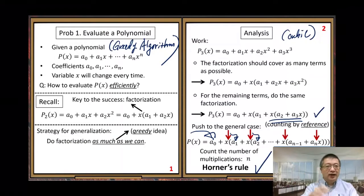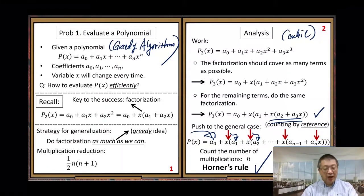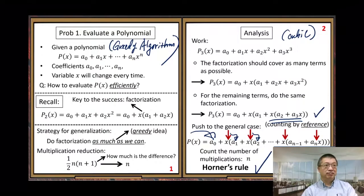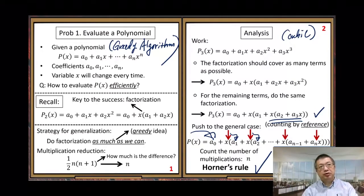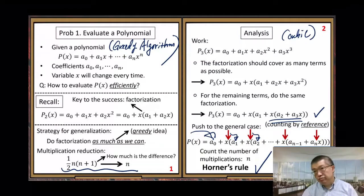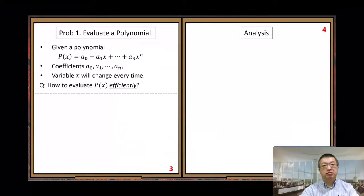Now let's look at the multiplication reduction result. Before the reduction we have a certain number of multiplications; after applying Horner's Rule we have n multiplications. To see the difference clearly, rather than just comparing the two formulas abstractly, let me work on two examples to let you feel the difference and get a strong impression about how significant it is.